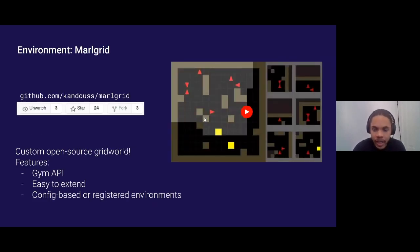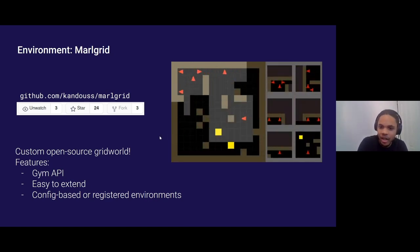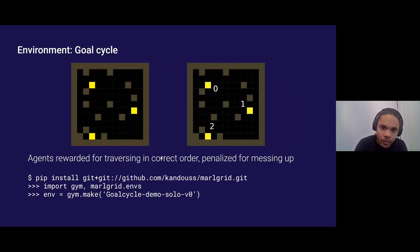I developed an open source grid world implementation called MarlGrid, which fits the standard OpenAI Gym API. It's easy to extend, easy to put a large number of agents in the environment, and it's very configurable. There are also some registered environments for reproducibility. Given how obscure this domain is, I'm surprised that it's already got a little bit of traction on GitHub. This is an example of the visualizations that I've built. In this environment, these agents are effectively untrained, but it's easy to include a lot of them in the environment and visualize what each of them is doing.